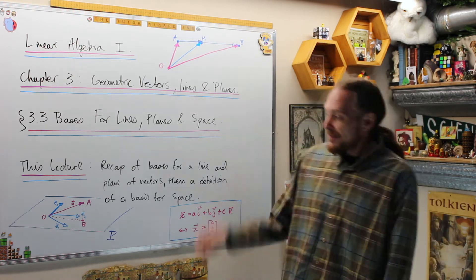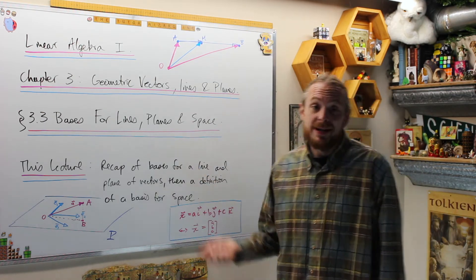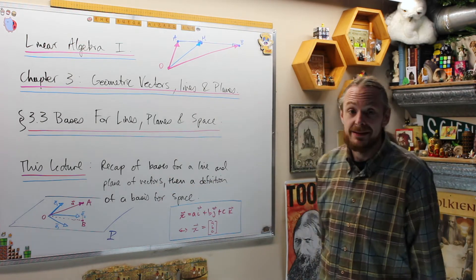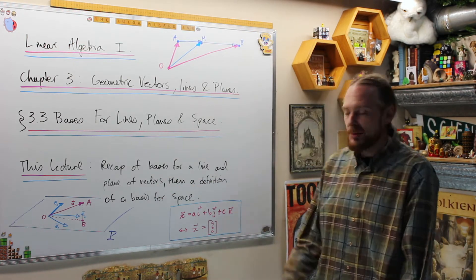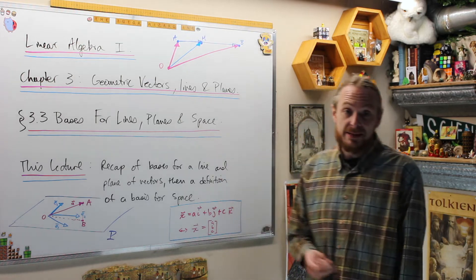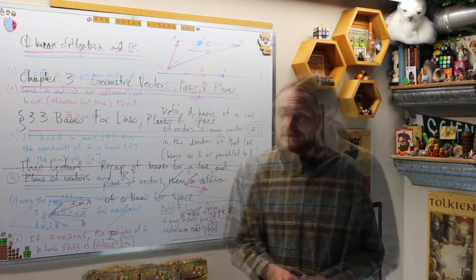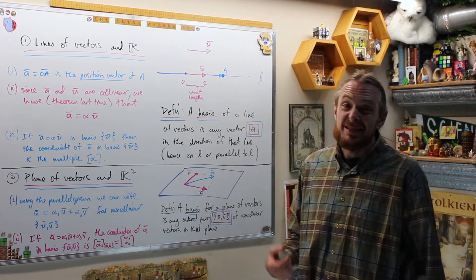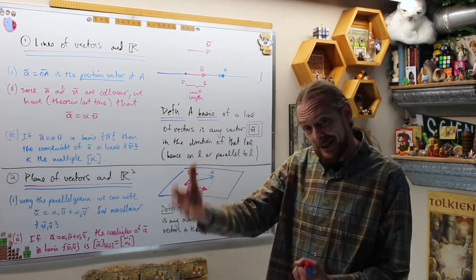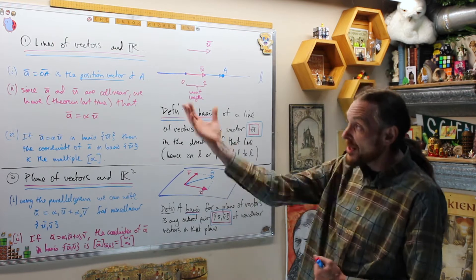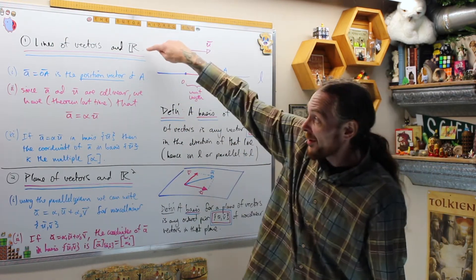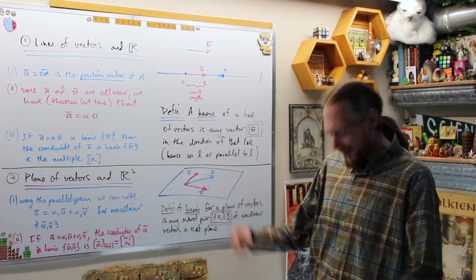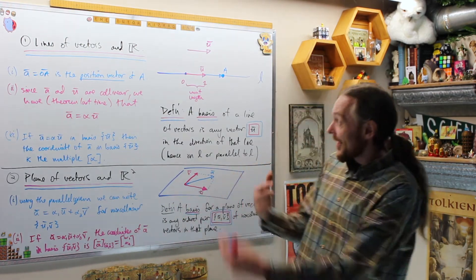Why do we call it three-space? This lecture specifically we're going to recap what a basis for a one-dimensional line is and a two-dimensional plane of vectors is, and then we'll give the same description of what space is and what a basis for space is. Let's get to it. Why are these called one or two-dimensional? Let's get into that.